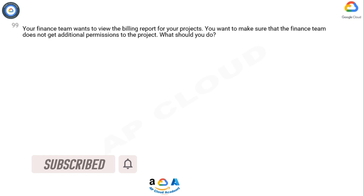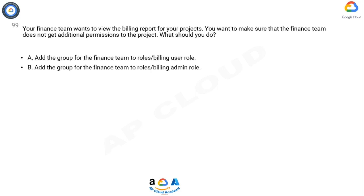Your finance team wants to view the billing report for your projects. You want to make sure that the finance team does not get additional permissions to the project. What should you do?